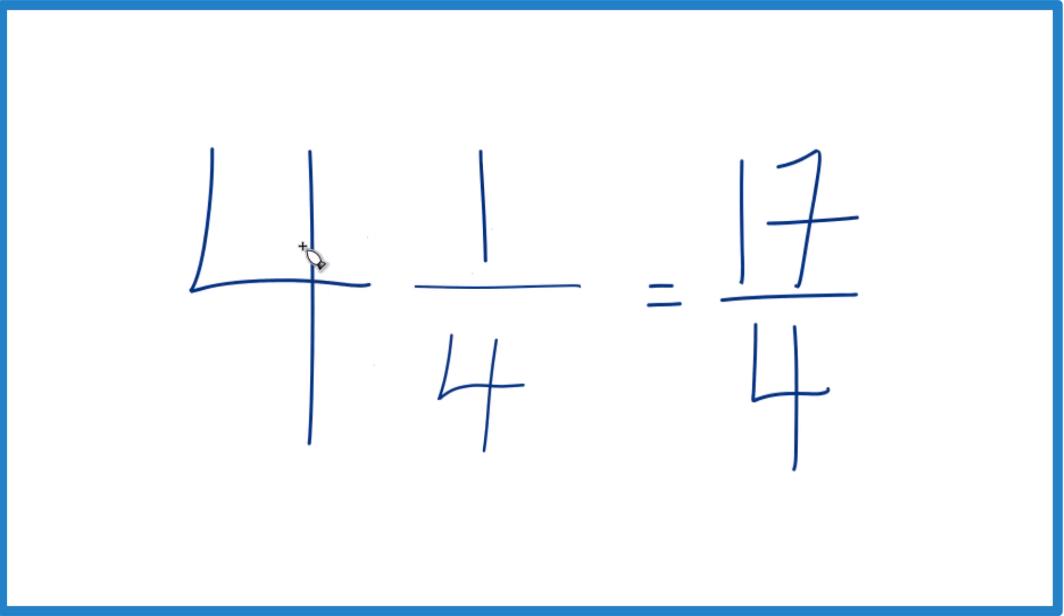Let's do it again. 4 times 4, that's 16. 16 plus 1, that's 17, and that's the numerator. Then we take the denominator, bring it across, and we're done.